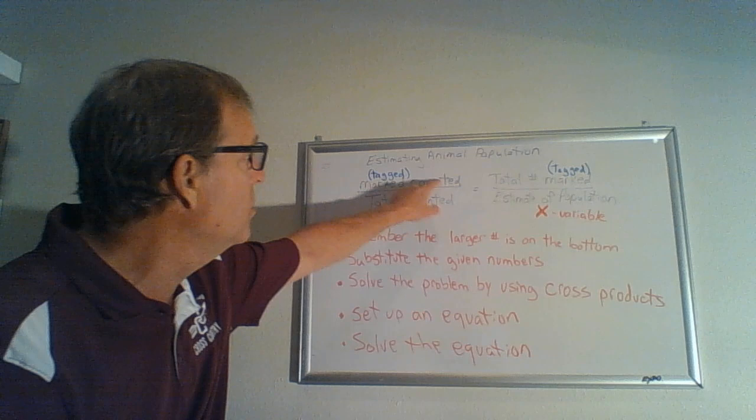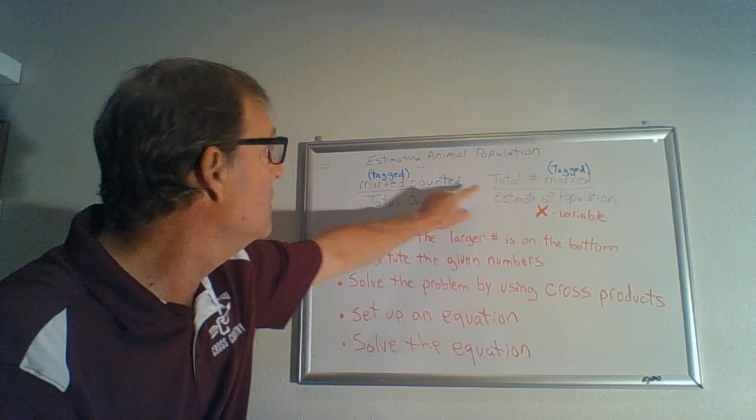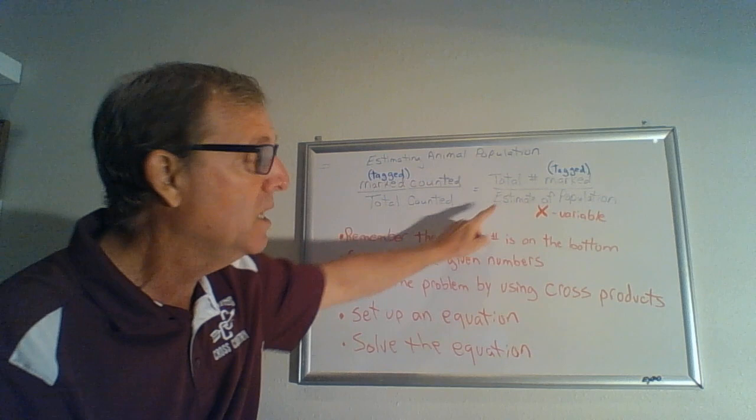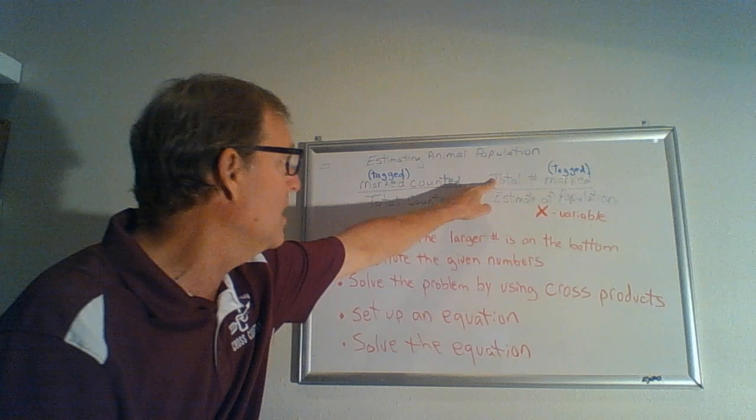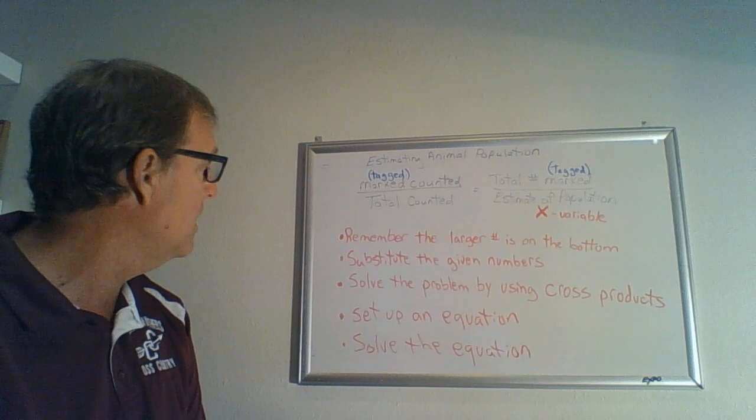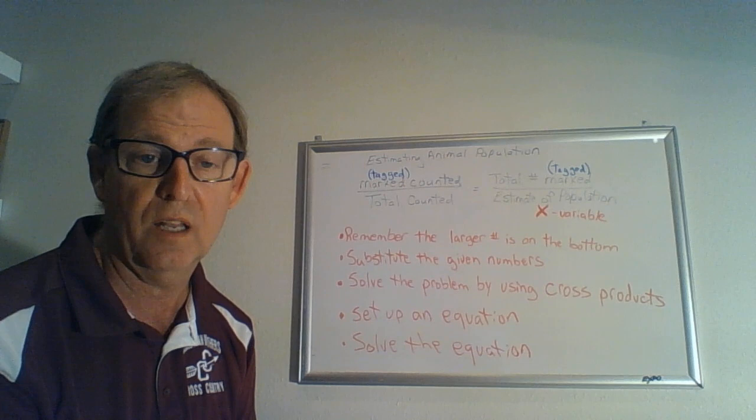You're going to solve the problem by using cross products. We've done that several times this year. So we're going to take this numerator and multiply it by this denominator, which will usually be the numerator, which will be a number times the denominator, which will usually be the variable. And we always put that on the left side. And then we have this denominator times this numerator. And then we set up the equation just like we've done. And then you solve the equation, which means you're solving for the variable. We just need to isolate the variable and get it by itself.